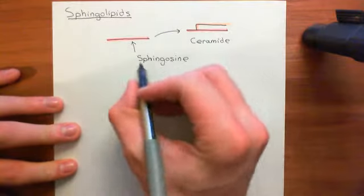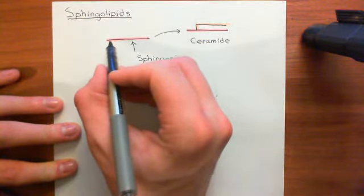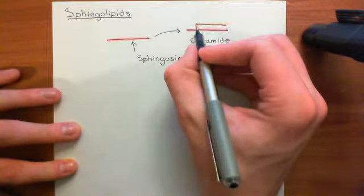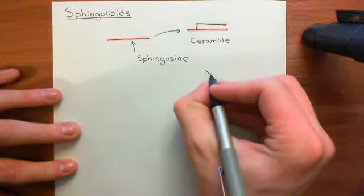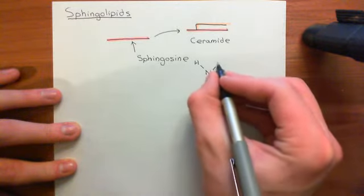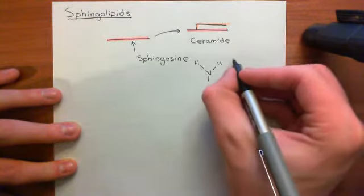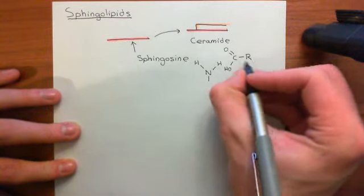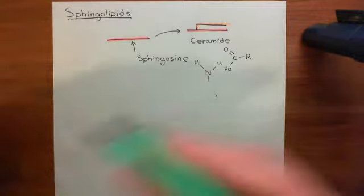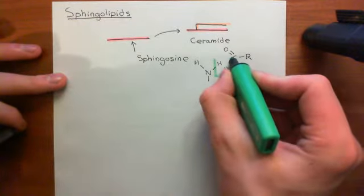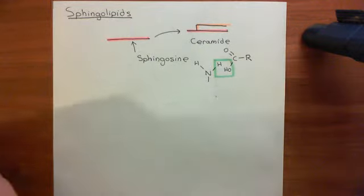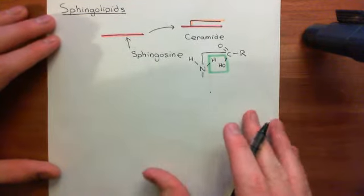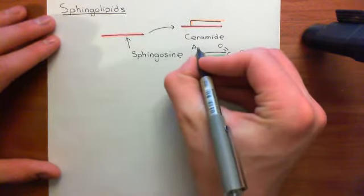You attach a long-chain carboxylic acid onto the amino group via an amide link. The amino group is on the sphingosine molecule. Here is the long-chain carboxylic acid with its carboxylic acid group and its long tail. You remove the alcohol group of the carboxylic acid group, remove the hydrogen of the amino group, and then bind the nitrogen atom to the carbon atom of that long-chain carboxylic acid. That link is called an amide link.